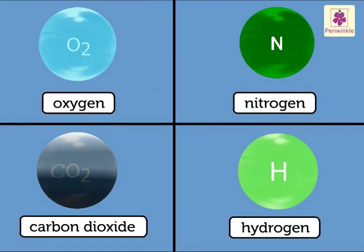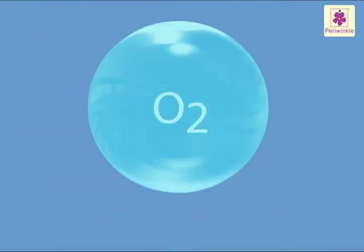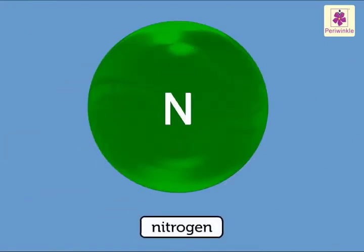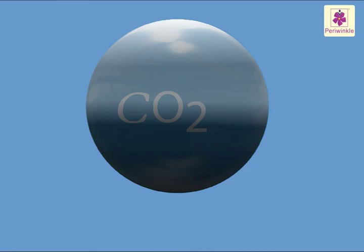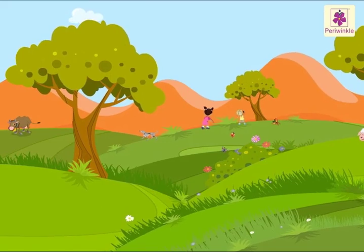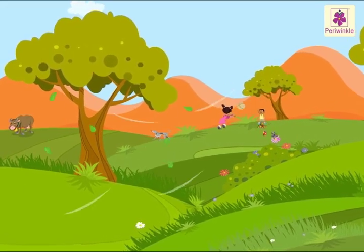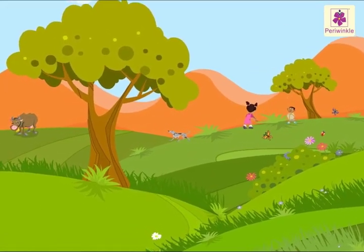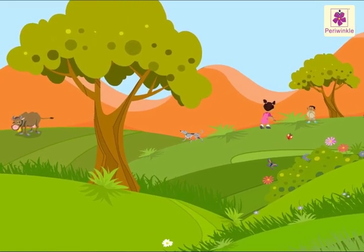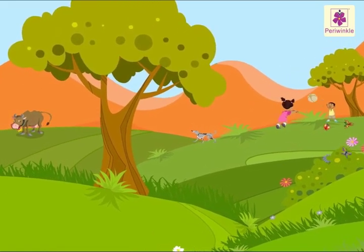Air is made up of different gases. Oxygen, nitrogen, and carbon dioxide are the main ones. Oxygen is the most important gas as it helps us, animals, and plants to live.